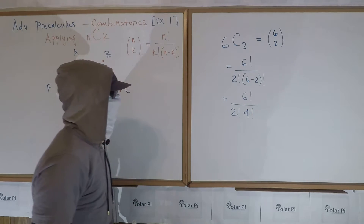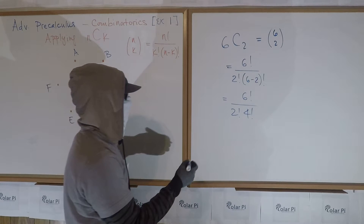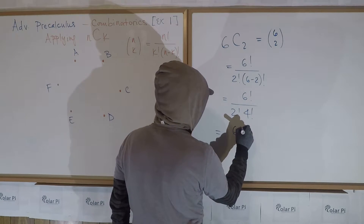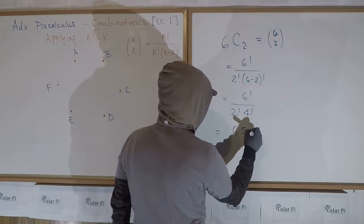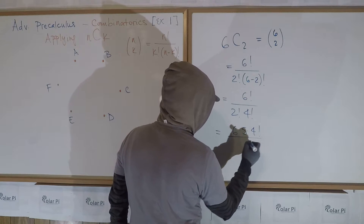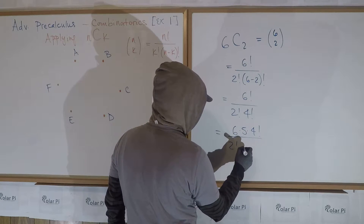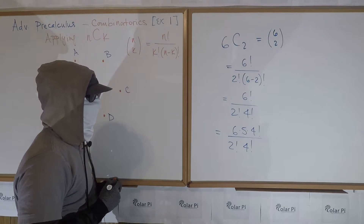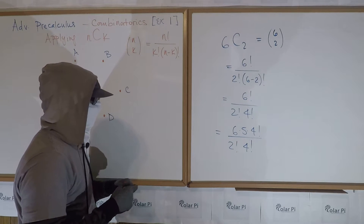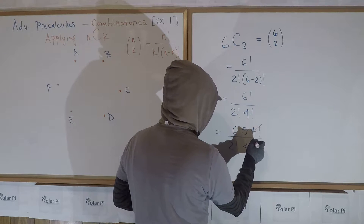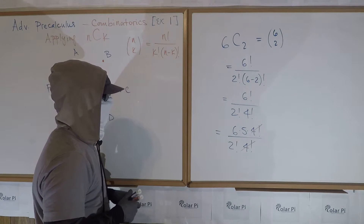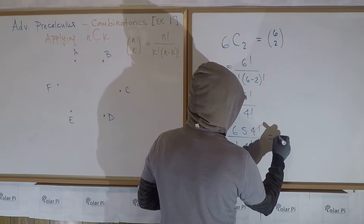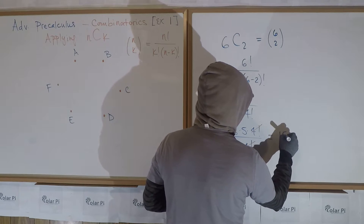That gives us four factorial. But six factorial in turn could be written as six times five times four factorial. So we have that divided by two factorial and four factorial. The four factorials cancel, and we get thirty over two factorial, which is thirty over two, which is fifteen.